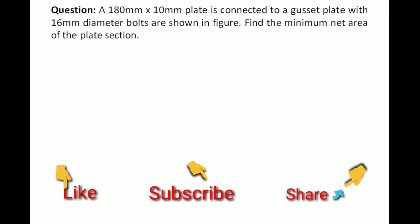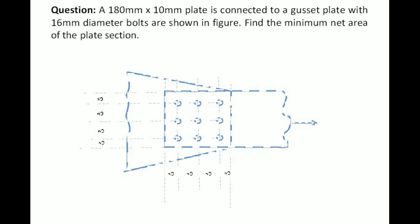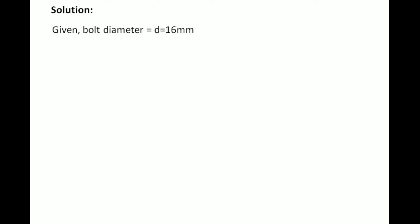The first question is a simple bolted connection. The question says that a 180×10 mm plate is connected to a gusset plate with 16 mm diameter bolts as shown in the figure. Find the minimum net area of the plate section. This is the figure given to you.